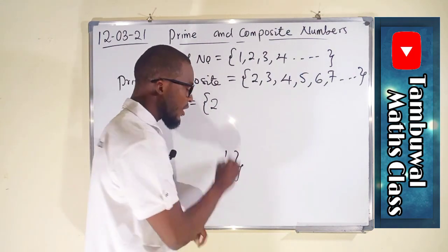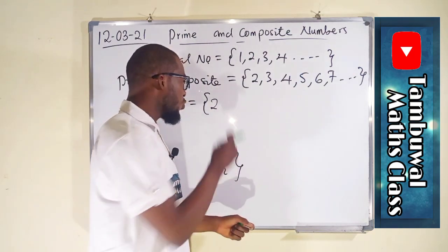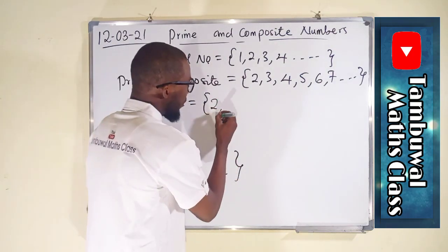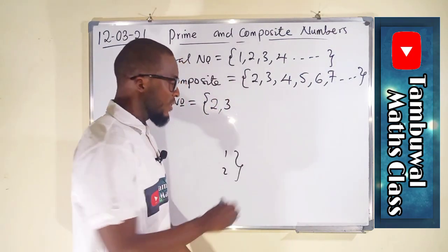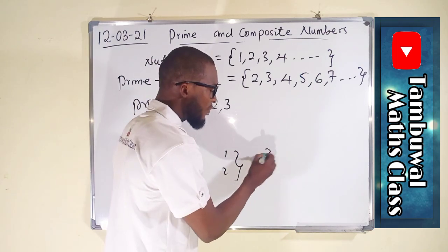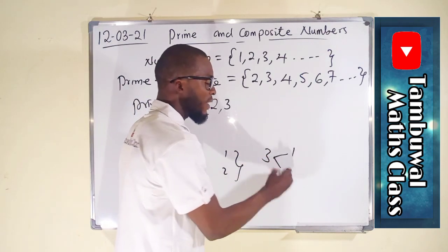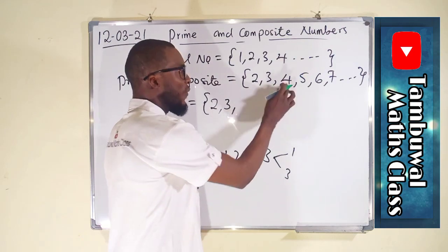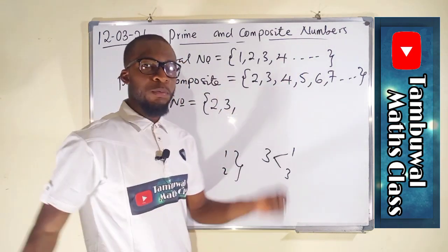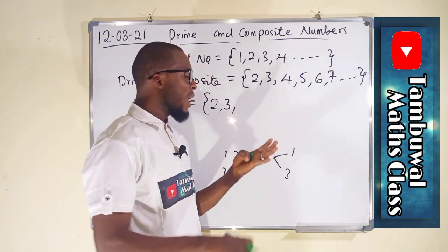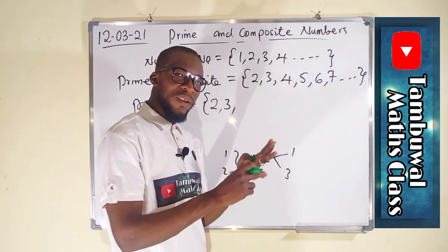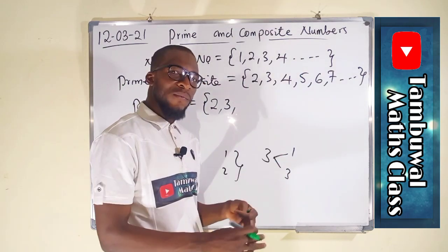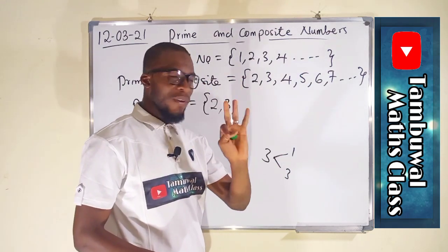Factors, in other words, are those numbers that can go into that number without remainder. We have three, because three also has two factors: one and three. Four is not prime because four has one as a factor, two as a factor, and four as a factor — so it has three factors.